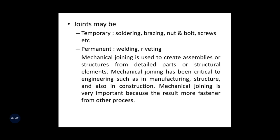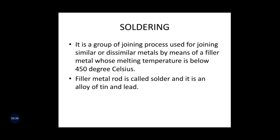Mechanical joining is used to create assemblies or structures. A machine is an assemblage of several components. These joining processes are used to make products, machines, and structures from detailed parts or structural elements. Mechanical joining has been critical to engineering in manufacturing and construction. Now we are going to discuss the soldering process.